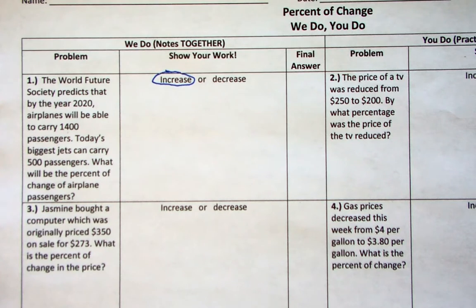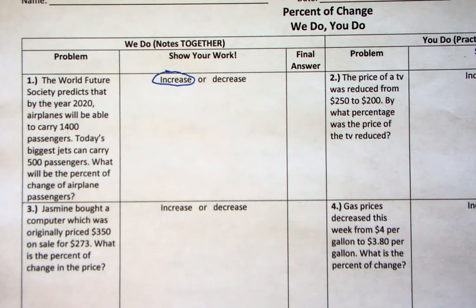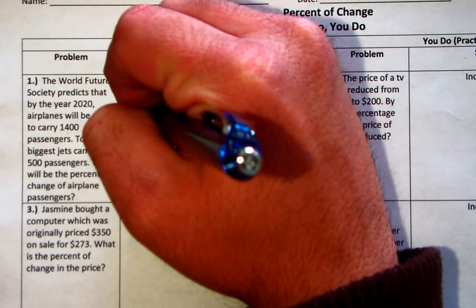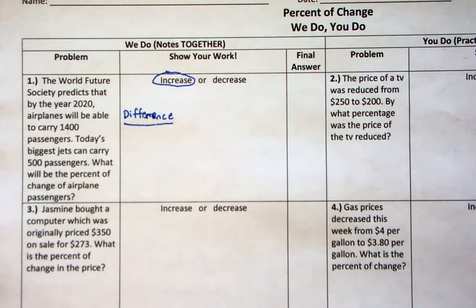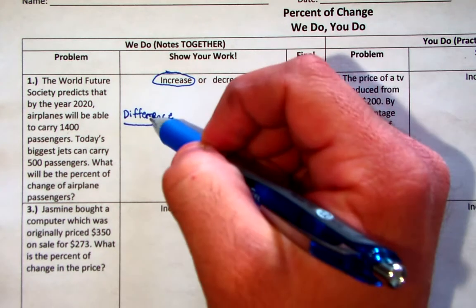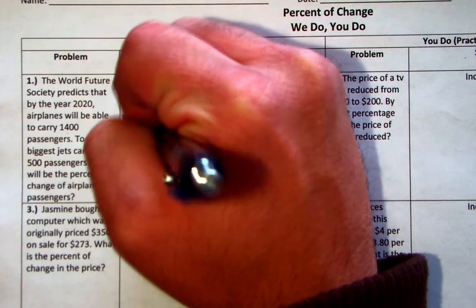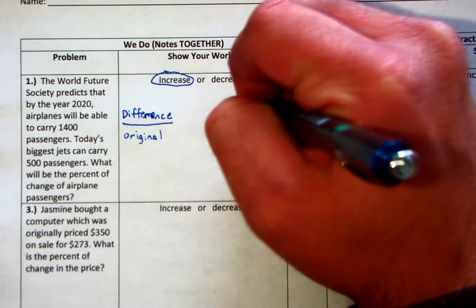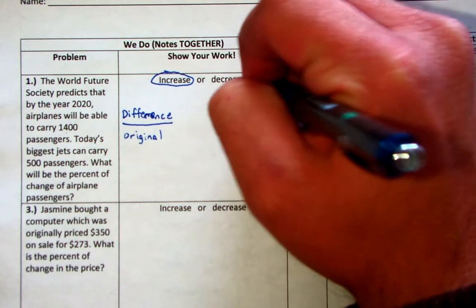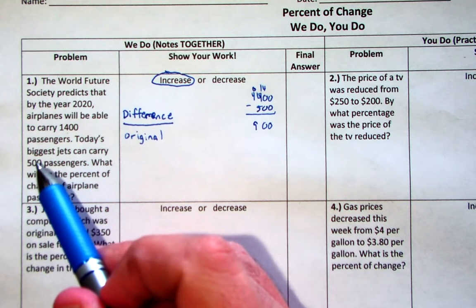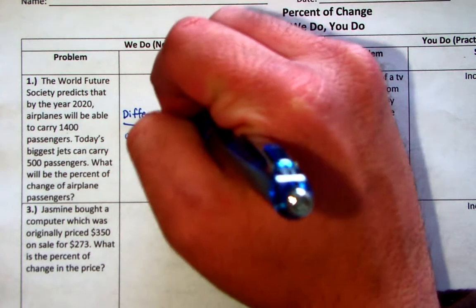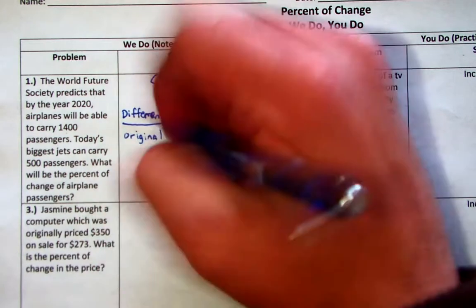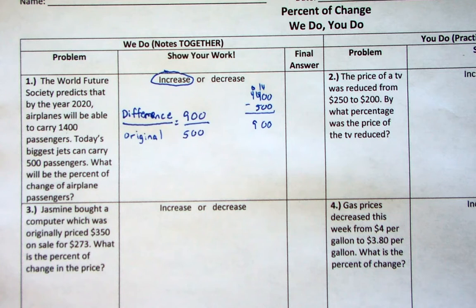Increase — so you've solved part of the problem. Now here's how you do the percent of change — doing the math. The first thing you have to do is find the difference from the original to the new. After you find the difference from the original to the new, you put the difference over the original information. The difference from 500 to 1,400: 1,400 minus 500 equals 900. So the difference from the original to the new is 900. What was the original information? Originally it can carry 500. Now you have a fraction.